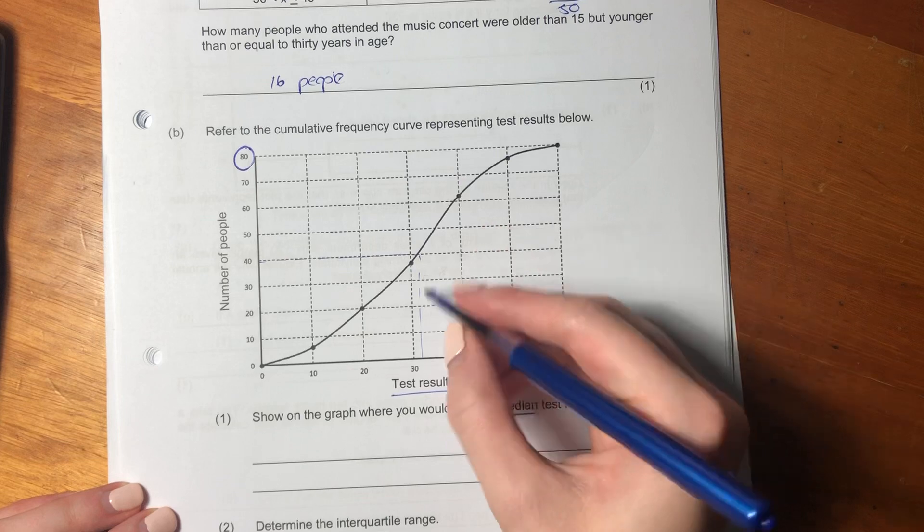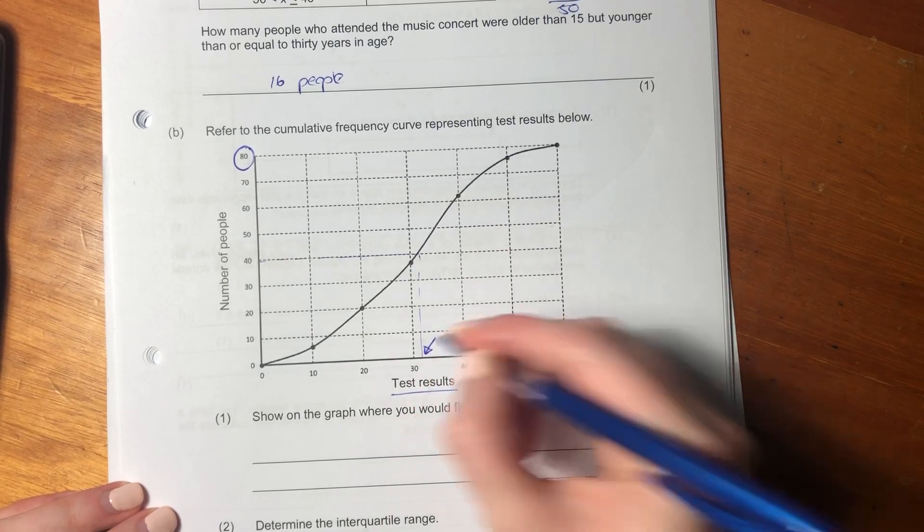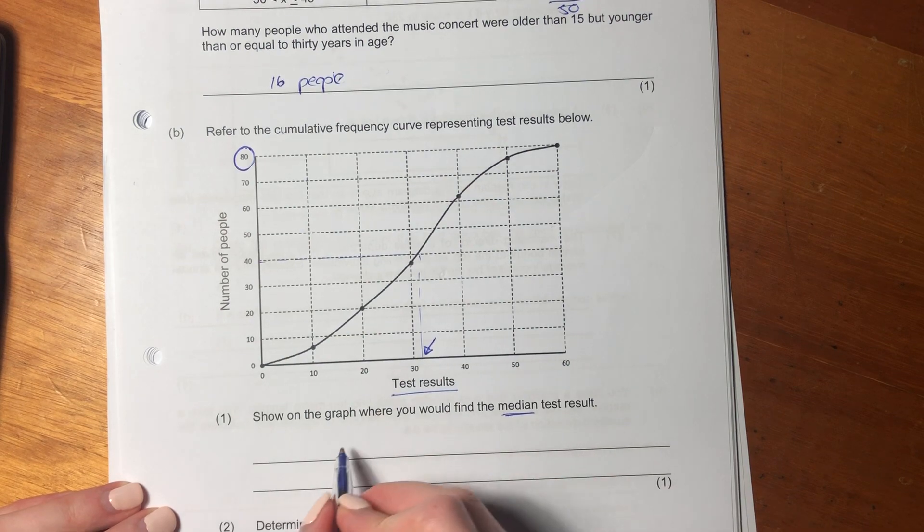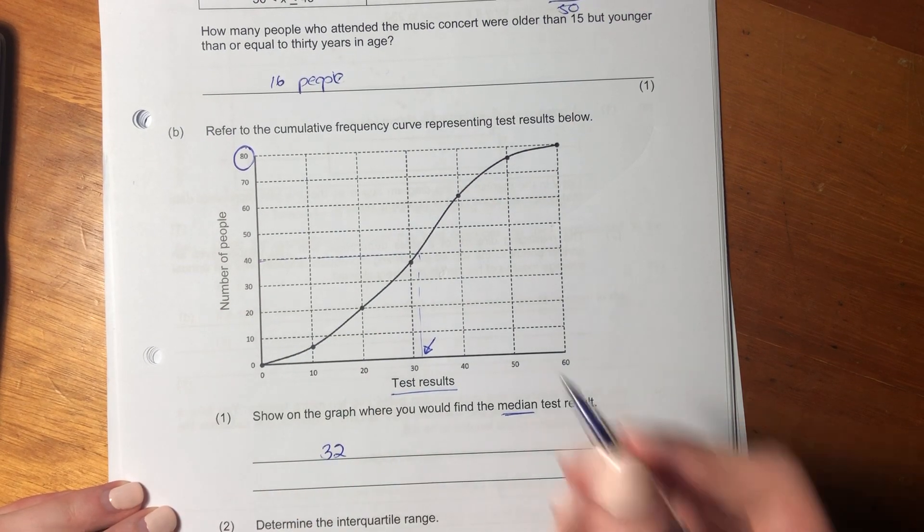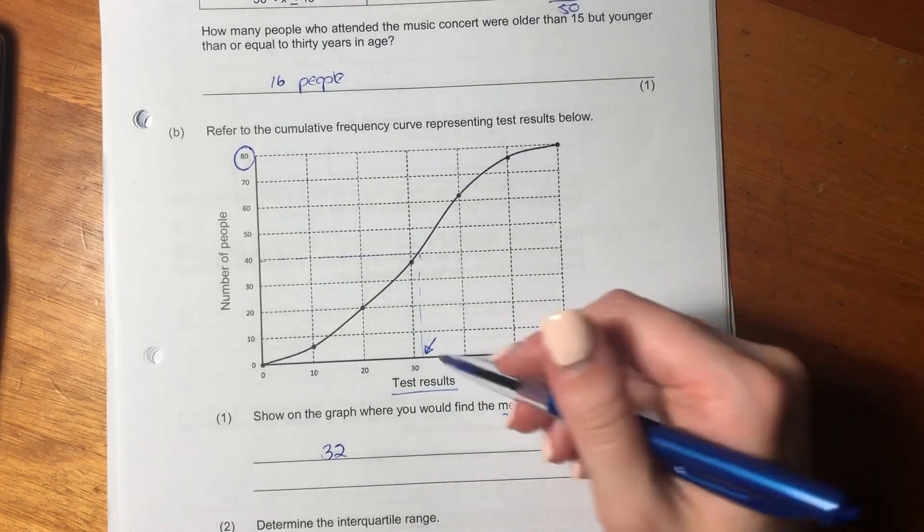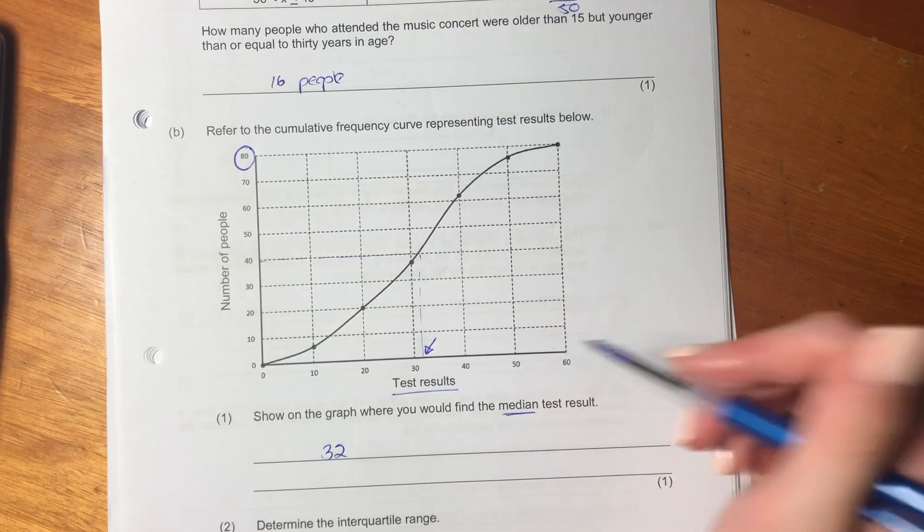So it's kind of over here. So it says show on the graph where you find the median results, and the median results, I think, is probably like 32. But I just drew a little arrow because it should show on the graph. So it's kind of looking like it's over there.